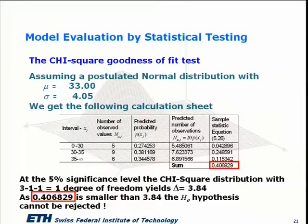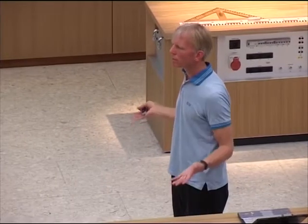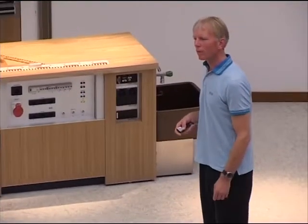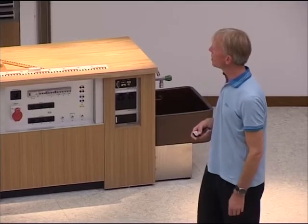In this case, with the standard deviation estimated from the data, the predicted probabilities change accordingly. At the same 5% significance level, looking at a chi-square distribution with one degree of freedom, we get a criterion delta equal to 3.84. However, our test statistic is again much smaller than this number, so we cannot reject the null hypothesis H0 — we could not reject that these models were valid based on the observations.